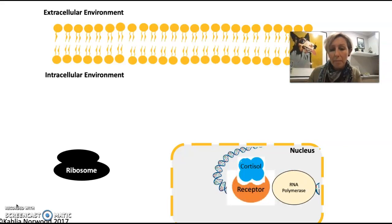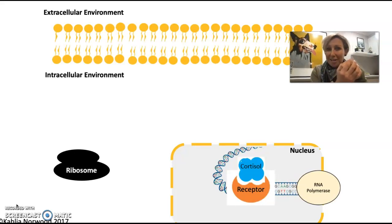What will happen once the cortisol-receptor complex has done its job? RNA polymerase will transcribe and produce a messenger RNA molecule, which will leave the nucleus, find the ribosome, and the polypeptide will be translated.